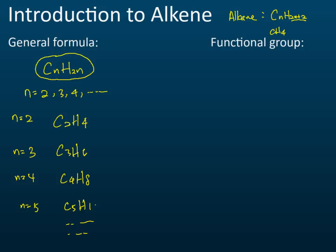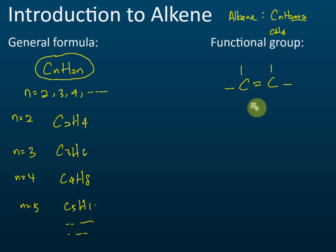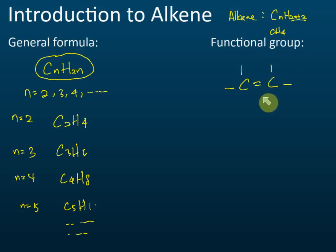The functional group of alkene is the double bond (C=C). A functional group is a group of atoms bonded together that takes part in chemical reactions. For alkene, when a chemical reaction occurs, it occurs at this double bond — not at any other place. You must remember the general formula and the functional group of alkene.